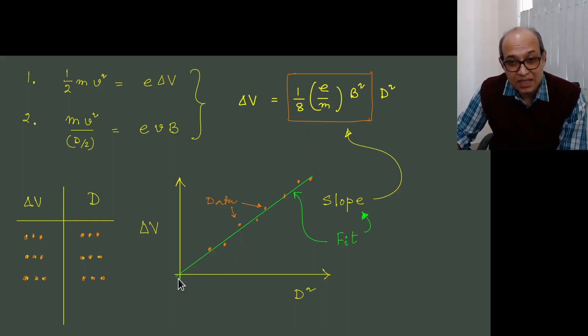And then if we fit it with a line passing through the origin, a straight line, then the slope of the line gives us this, 1 by 8 E by m times B squared. So if we know the value of B squared then finding out E by m is quite straightforward. This is the working formula of the device.